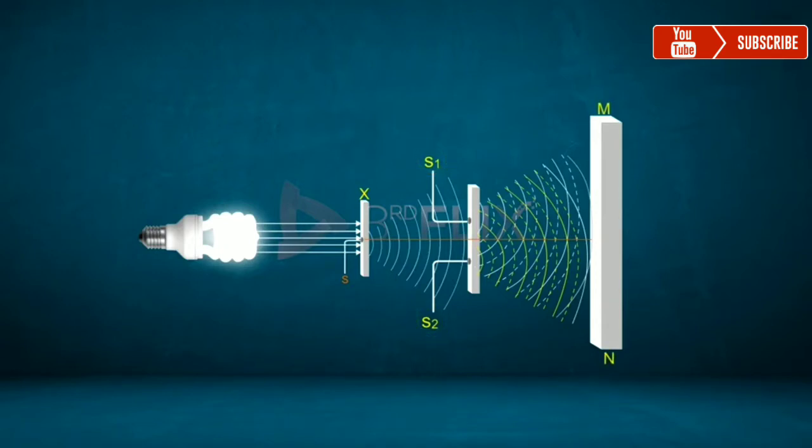This may be repeated by using slits instead of pinholes. Alternate bright and dark bands are formed on the screen MN. These bands are equidistant and of equal thickness.